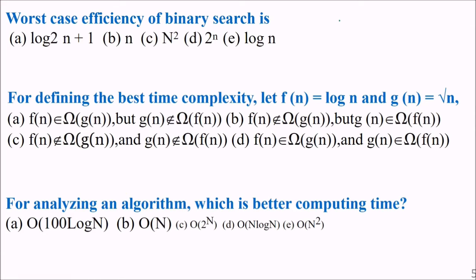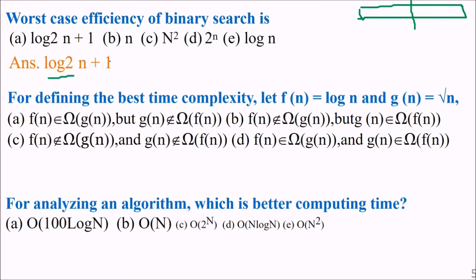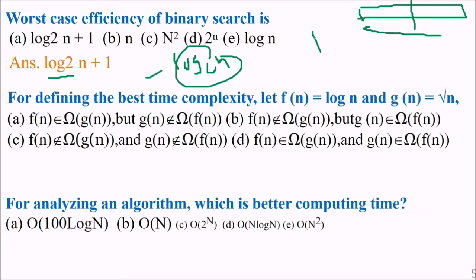What is the worst case efficiency of binary search? When does binary search give you the worst case? The answer is log base 2 of n plus 1 — we take it as log base 2 of n. This worst case occurs when the element is not present in the array, so you have to keep halving until you've gone through all levels, giving log base 2 of n plus 1 complexity.